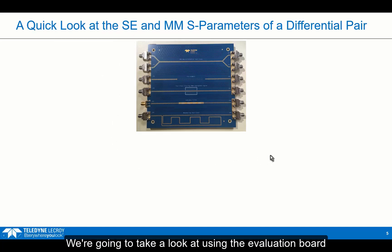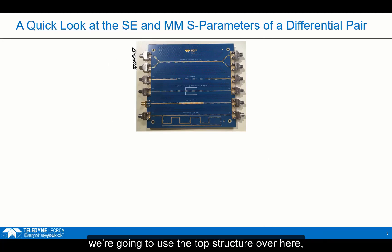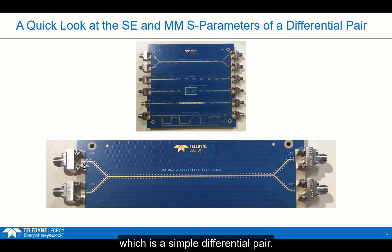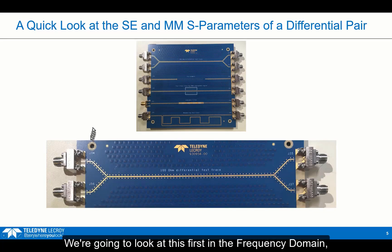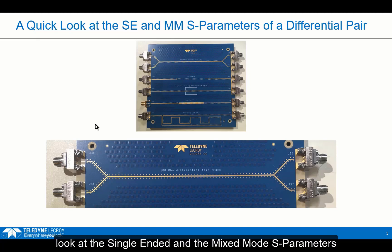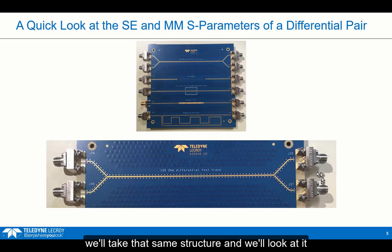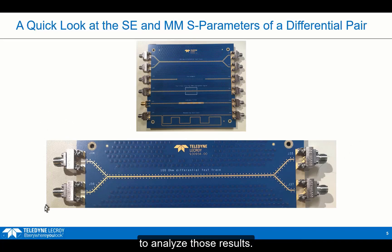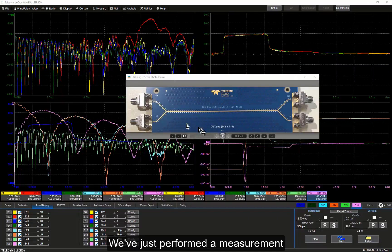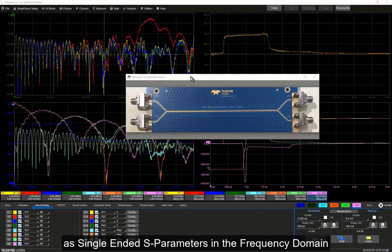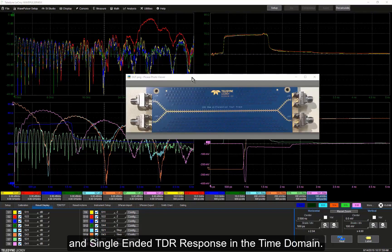Let's spend the last couple of minutes taking a quick look at the single-ended and mixed-mode S-parameter measurements of a differential pair, using the evaluation board that comes with the WavePulsar 40IX. In particular, we're going to use the top structure, which is a simple differential pair. We're going to look at this first in the frequency domain — the single-ended and mixed-mode S-parameters — and in the next few videos we'll look at the same structure in the time domain and apply deep toolbox analysis. We've just performed a measurement of the four-port differential pair structure, and we're looking at the results as single-ended S-parameters in the frequency domain and single-ended TDR response in the time domain.